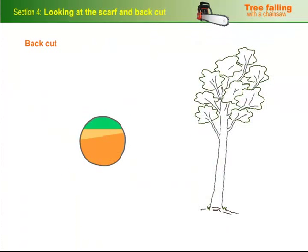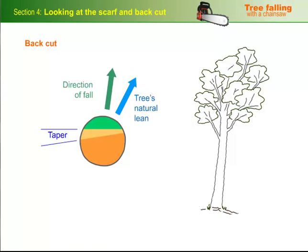But there are times when the tree may call for the hinge to be cut on a taper, so you can pull the direction of the fall away from the tree's natural lean. In these cases, there'll be variations to the one tenth rule, but we'll talk more about that in Section 6.